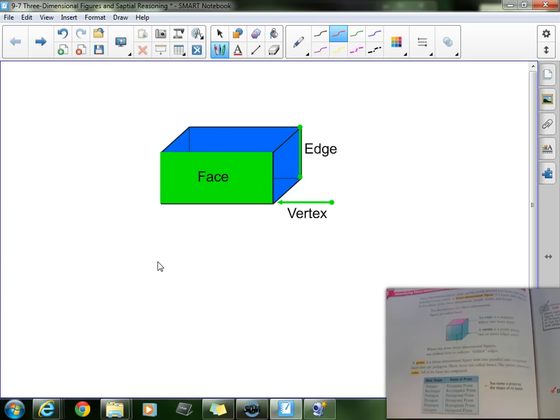All three-dimensional figures are made up of three things. You can see them on the board here. You see edges, vertices (the plural term, or vertex singular), and then faces. All three-dimensional figures are made up of those three things.